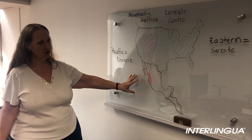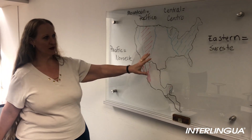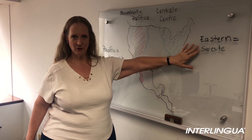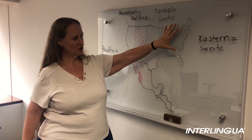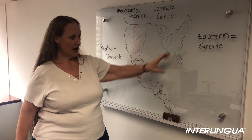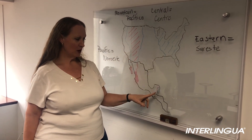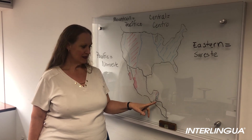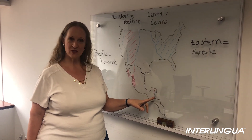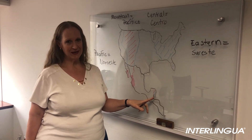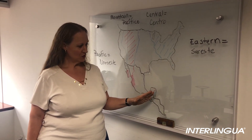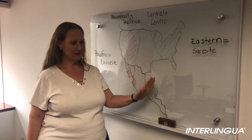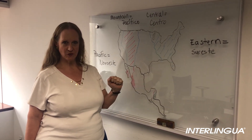The first time zone we have in the U.S. we call Eastern, Eastern time zone, which is this part of the United States. And in Mexico you also have one state that is in the Eastern time zone, which is Quintana Roo. So in Mexico this is the only one that is in the same time zone as Eastern.